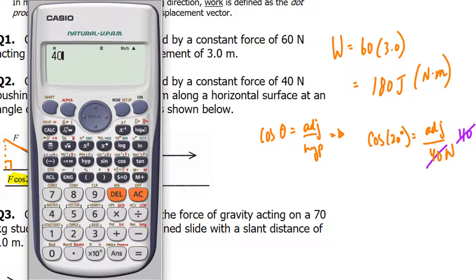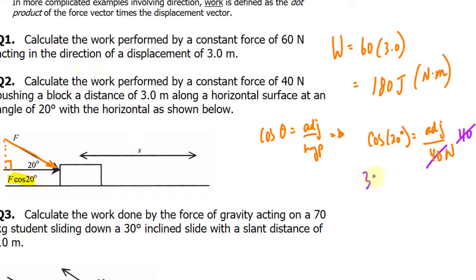So 40 times cosine of 20 degrees—make sure your calculator is in degree mode—we end up with 37.587 newtons. What I like to do is not round until the very end of my question, which is why I kept three digits after the decimal place. Now that we have the force along the horizontal, I'll multiply this by the displacement of 3.0.